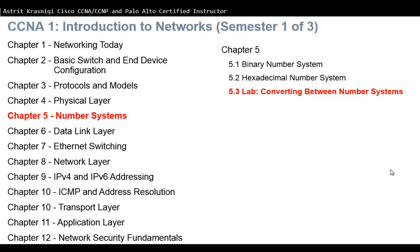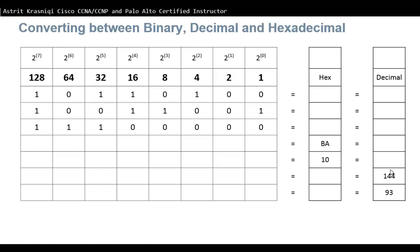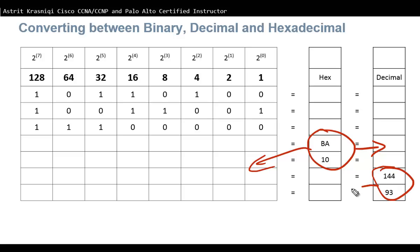We have three numbering systems that we should be able to convert between: binary, hexadecimal, and decimal. I've got a table with some binary digits that I want you to convert to hexadecimal and decimal. I've also got hexadecimal digits to convert into binary and decimal, and decimal digits to convert to hexadecimal and then to binary.